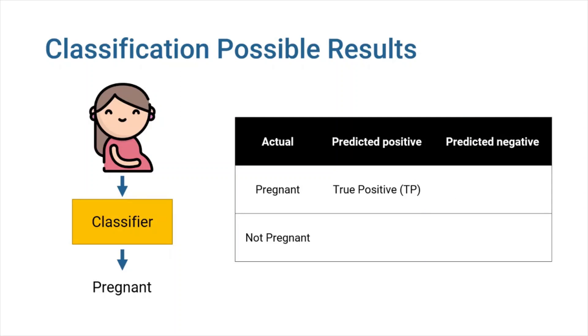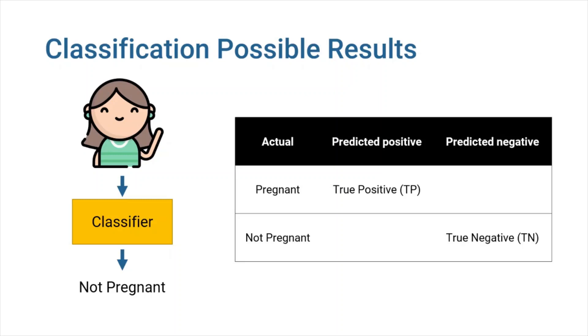If the person is actually pregnant and our classifier correctly detects it, the output is a true positive. Also, if the person is not pregnant and the classifier correctly classifies that person as not pregnant, we will have a true negative output. These two are correct classifications, but our classifiers can and will make mistakes as well.